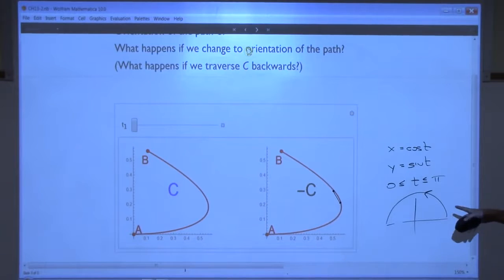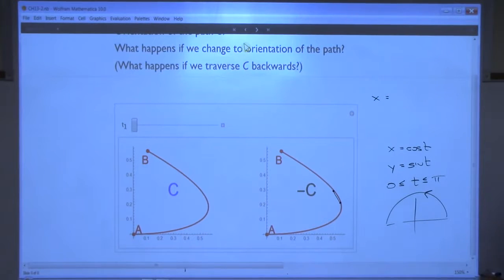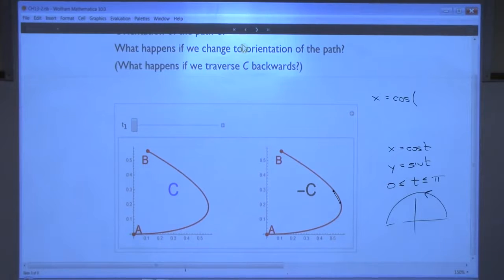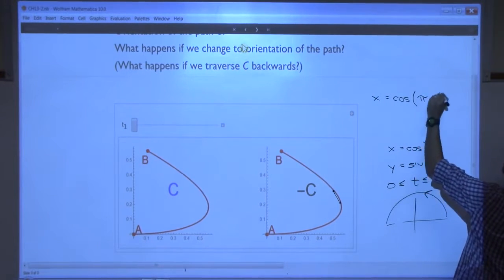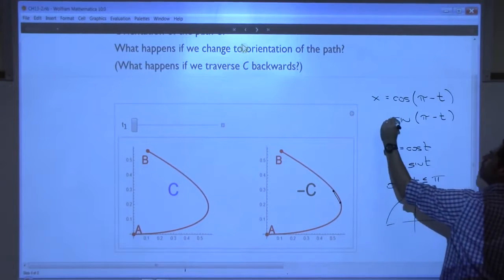Do you have any idea how we would draw this backwards? How we would actually start here and go to here? Let's try something. When I plug in zero, where do I need to be? I need to be on this side, right? So I need the angle to be pi. And when I plug in pi, I need the angle to be zero. Any idea? How about this? Will this work?